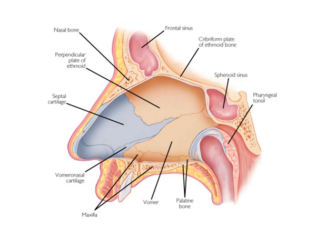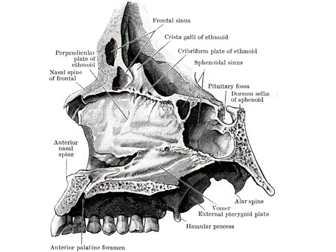The cartilaginous part of the nasal septum is broad quadrilateral in shape, thicker at its margins than at the center. It occupies the gap between the perpendicular plate of ethmoid and vomer in the recent state and occupies a space in the anterior part of the nasal septum. This is the space occupied by the quadrilateral septal cartilage.